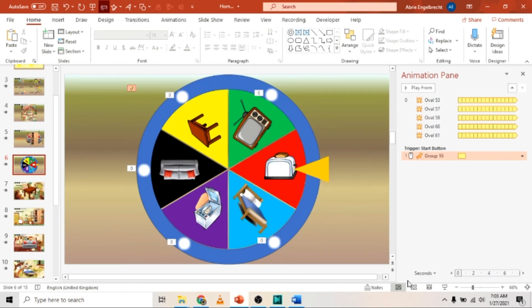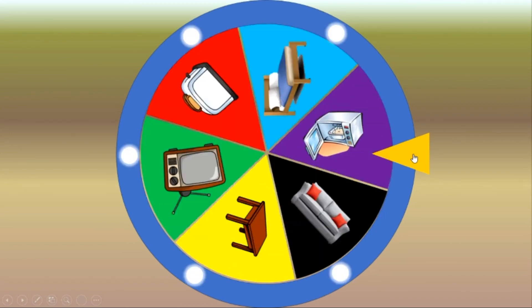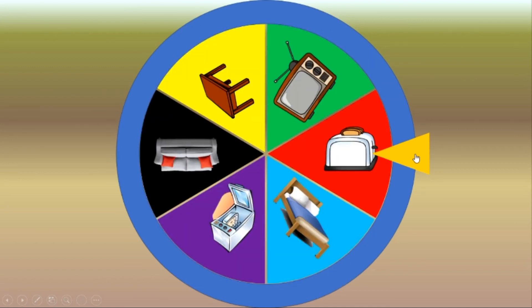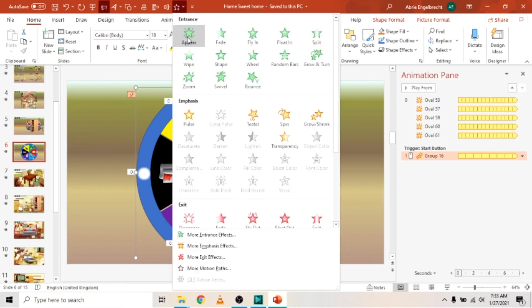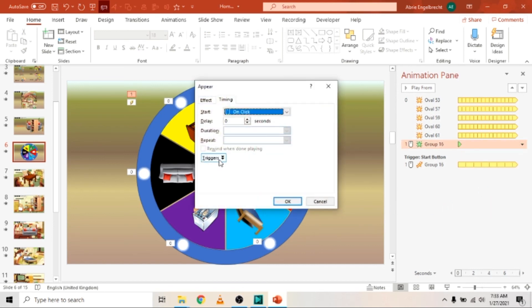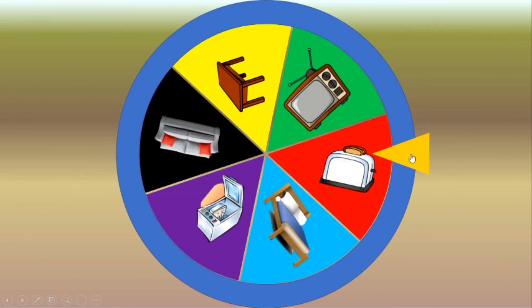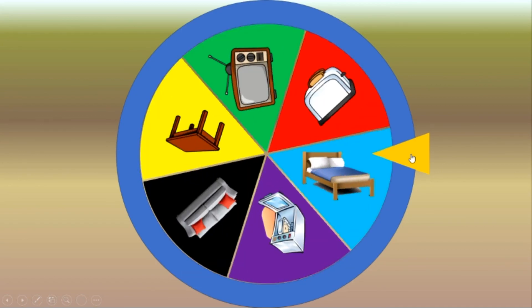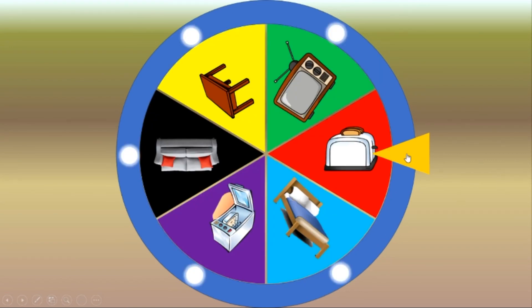Now clicking the triangle starts the spinning — you can spin again and again, but it goes to the same position each time. To fix that, select the group wheel again and add another animation — Appear. Right-click that animation, go to Timing, add the trigger to Start Effect on Click of 'Start Button', and say OK. Now when you run the presentation, the wheel spins with flashing lights and stops on a result — for example, a table, then a television.